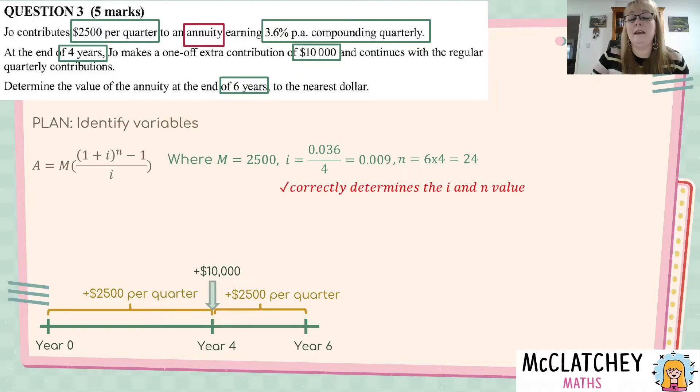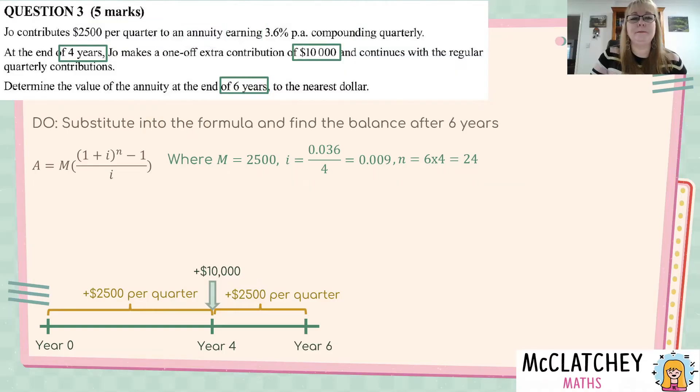Now, this was our first mark to come up with the n value correctly. So, if you didn't change the interest rate to a quarterly value or you used four years, for example, instead of six years, you would have lost this first mark. But you would have been allowed what's called follow-through marks for the rest of the question. So, you'll only be penalized once if you've made a mistake at this point.